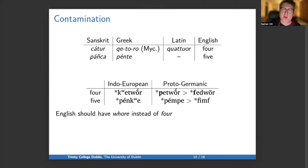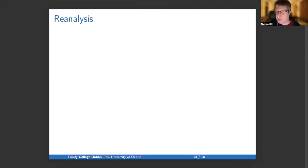Just for a reminder, contamination happens in a semantic subsystem when the form of one element of that subsystem influences the form of another element of that subsystem. The third type of analogy is reanalysis.